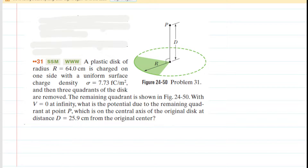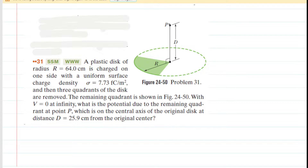Please take a moment to pause the video and reread the problem before listening on. Our goal is to find the total electric potential at point P created by this one-fourth of a charged disk. Our strategy is to calculate the electric potential from the completely charged disk — imagining the entire disk is present — and then, because electric potential is a scalar quantity, multiply the result by one-fourth.